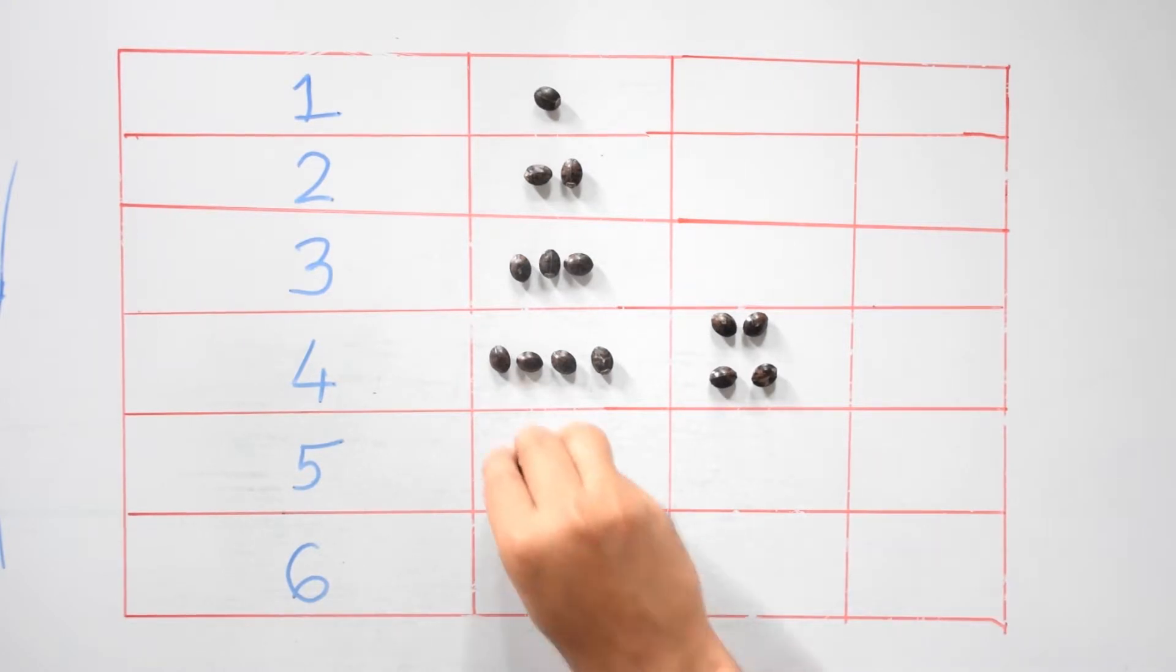Let's take five. Now five cannot be arranged in a way in which two groups have equal number of seeds.